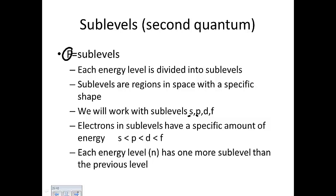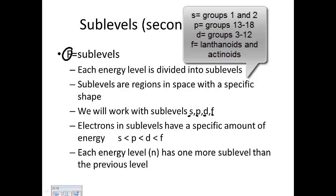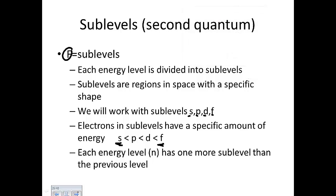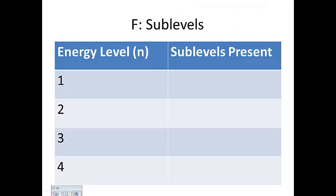The sublevels are S, P, D, and F, and we'll see those on the periodic table. They're in increasing order of energy — S is the lowest, F is the greatest. As you increase energy levels, you increase the number of sublevels. The first energy level has only S. The second energy level has S and P.